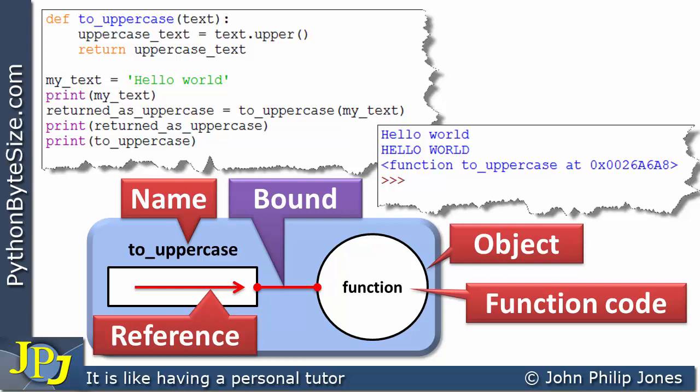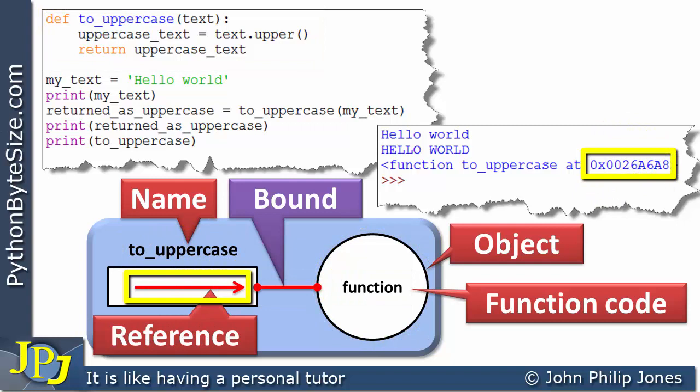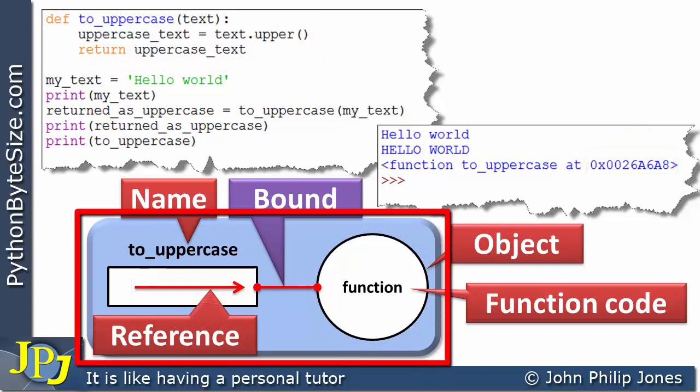So when we consider the function aspect of this program, this is the relationship we end up with: we have a name which is bound to the object, where the object is the function. This reference here is the reference to that function — very similar to how we would look at an integer, which I'll remind you of a little later in this video.